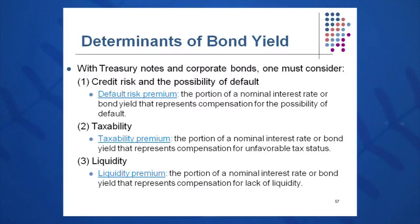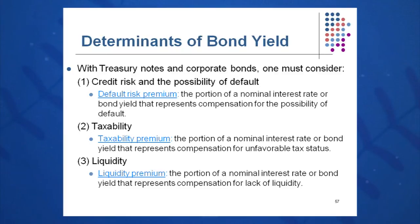What makes up bond yield for a corporate bond? We have some extra compensation we require. We want a default risk premium — part of our total interest rate as compensation for the possibility of default on the bond. A corporation might default if they go bankrupt or run through a difficult financial stretch. We also want a taxability premium, since corporate bonds are taxable. And we want a liquidity premium, because bonds are not always liquid — not always sold every day for that particular corporation.